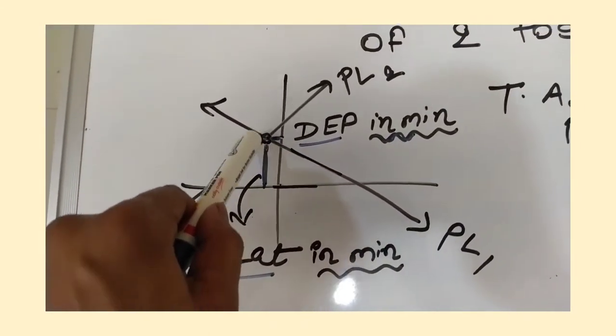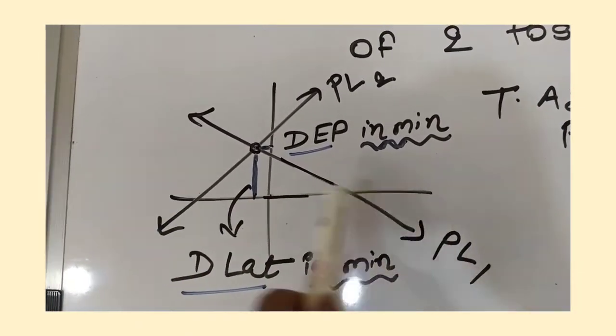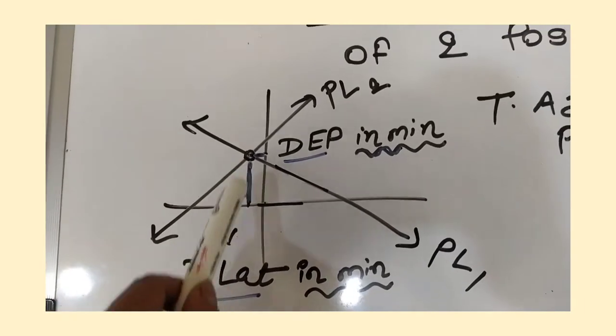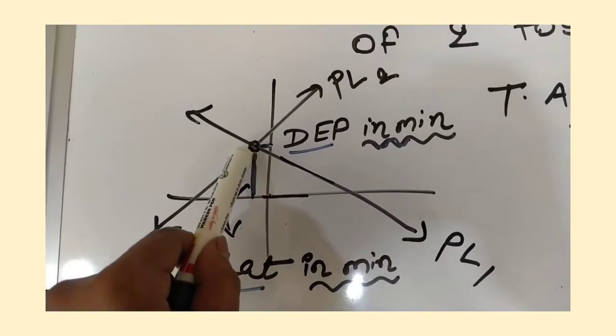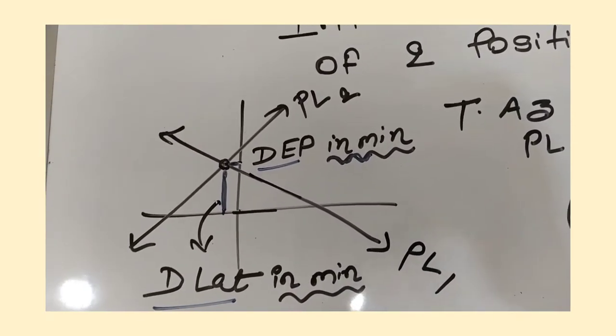From that fix, the vertical distance will give you d lat. The d lat is the observed latitude basis on which you'll correct the answer. That vertical distance will give you d lat. You will measure this distance by scale. For example, if it is coming three centimeters, then you will write d lat in minutes is three minutes.